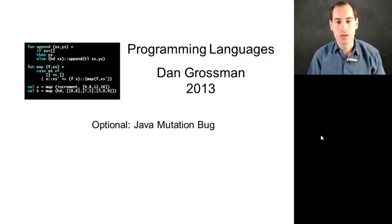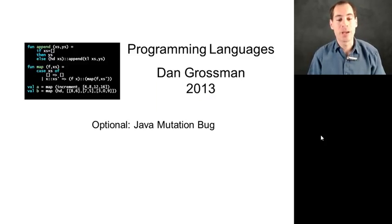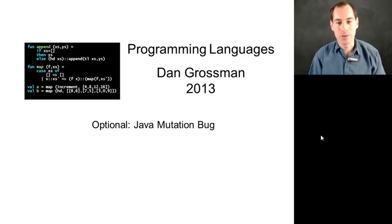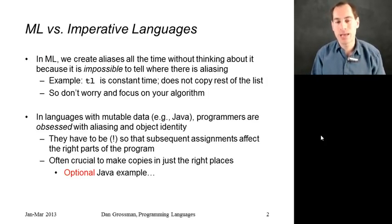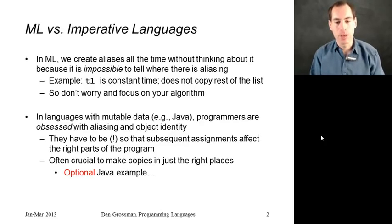In this segment, which is optional, I want to continue our discussion of the benefits of not being able to mutate data by showing you an example in Java. As I said at the end of the previous segment, in ML we can create aliases and not worry about one of those aliases causing an update that then affects other aliases.